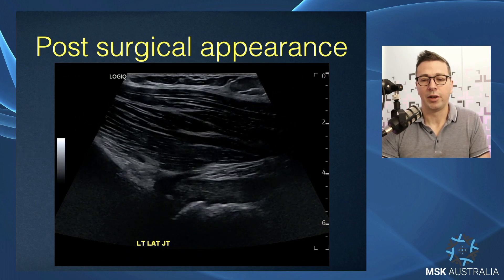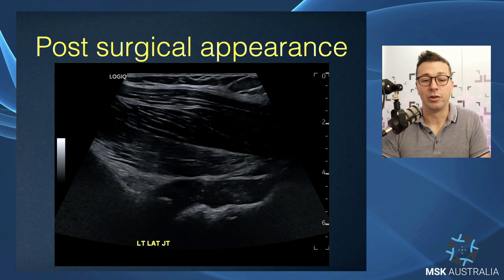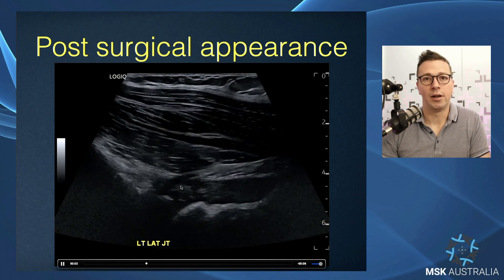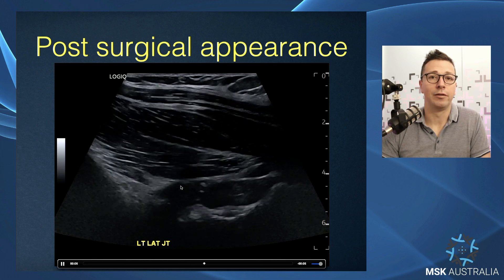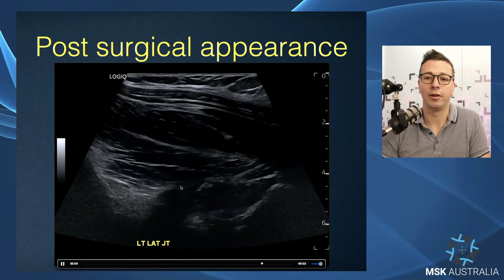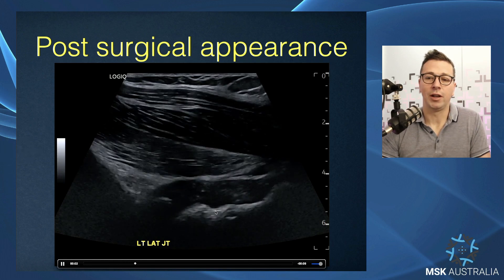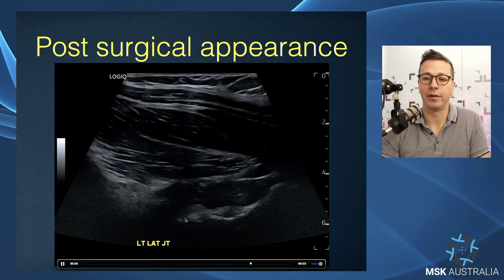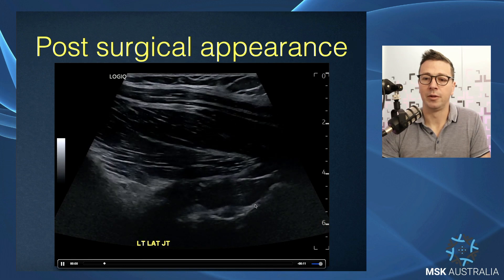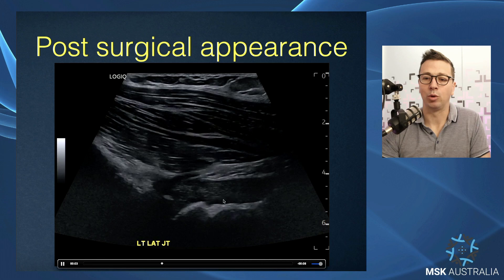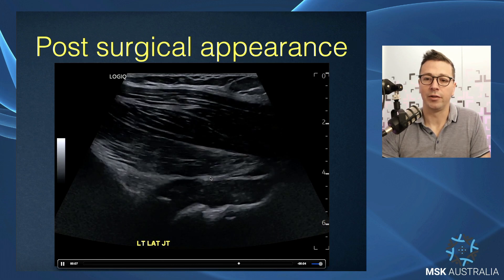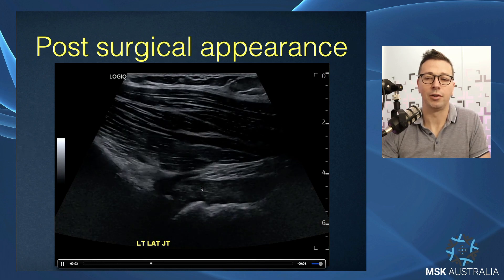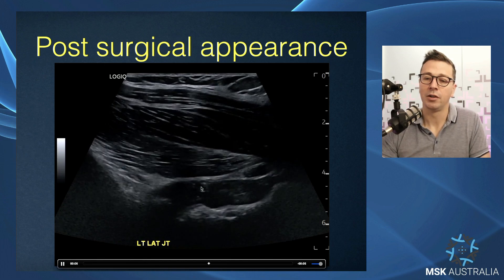With cam resection — for a young patient with a cam deformity and FAI who has not yet developed osteoarthritis — they may go in and resect that additional component of bone. Sonographically, we see the acetabulum and femoral head where they've scalloped out that cam component of the femoral head-neck junction, making it more concave. We can also see that they've incised through the lateral hip joint capsule, with suture material visible — a capsular closure has been performed.